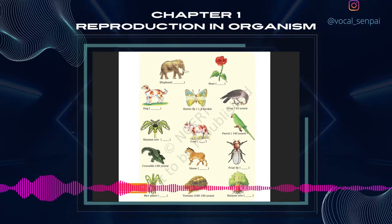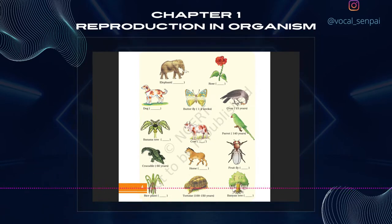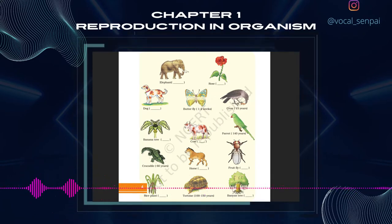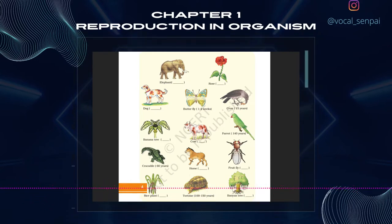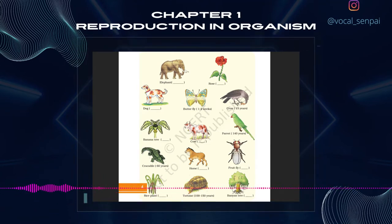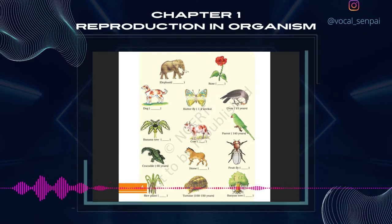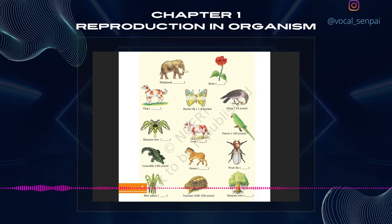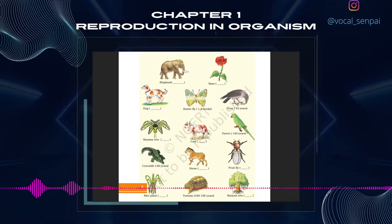Between these two extremes are the lifespans of most other living organisms. You may note that lifespans of organisms are not necessarily correlated with their sizes. The sizes of crows and parrots are not very different, yet their lifespans show a wide difference. Similarly, a mango tree has a much shorter lifespan as compared to a peepal tree. Whatever be the lifespan, death of every individual organism is a certainty, i.e., no individual is immortal except single-celled organisms.